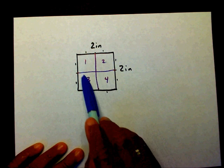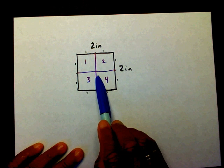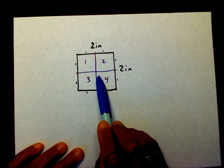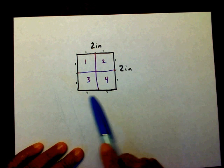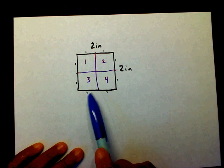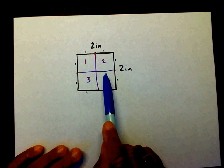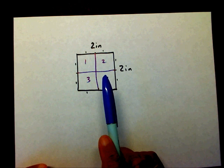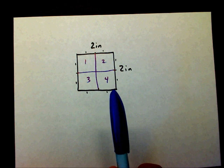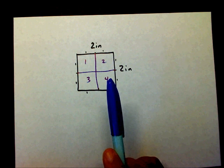So that created four blocks, and that is going to be your area for this square. We're going to figure out how many blocks will be created in each square.